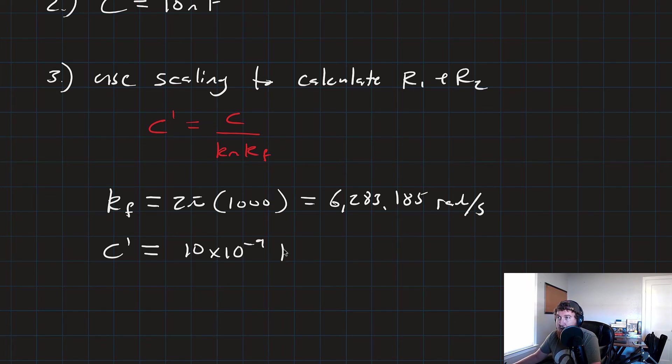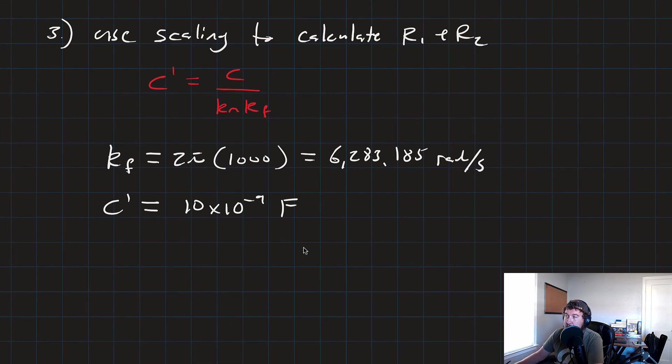And we can solve for our Km. So Km is going to equal C over C prime times Kf, which is going to be 1, the original capacitance, over the new capacitance, 10 times 10 to the negative 9.